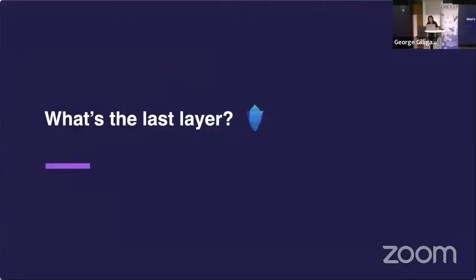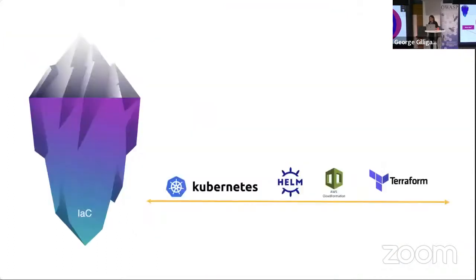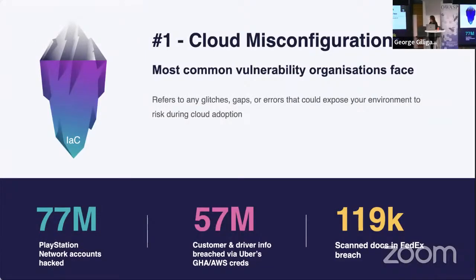What's the last layer? Infrastructure as Code. IaC is an approach to manage data center servers, storage, and networking infrastructure. It simplifies large-scale configuration and management, letting you provision resources through code as a single source of truth. You can version control, test, and monitor it — but you also have security vulnerabilities here.